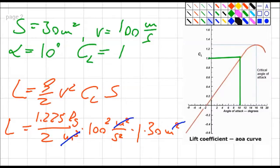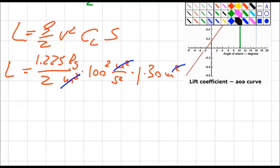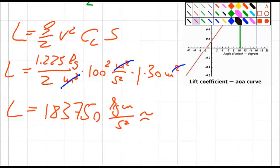Which remains kilogram times meters over square second which is clearly a force, which is newton. I do the numbers. 1.225 divided by 2 times 10,000 times 30 equals 183,750 kilogram meters over square second. This is roughly 184,000 newton or 184 kilonewton.